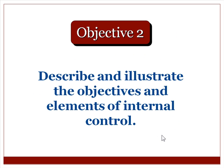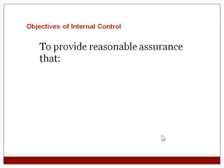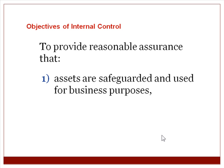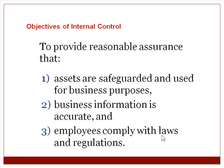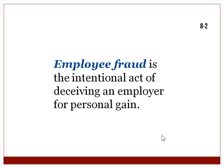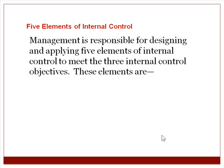The second objective is to describe and illustrate the objectives and elements of internal control. The objectives of internal control are to provide reasonable assurance that assets are safeguarded and used for business purposes, business information is accurate, and employees comply with laws and regulations. Employee fraud is the intentional act of deceiving an employer for personal gain.